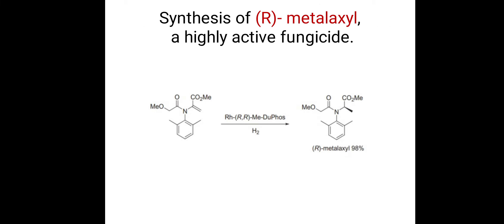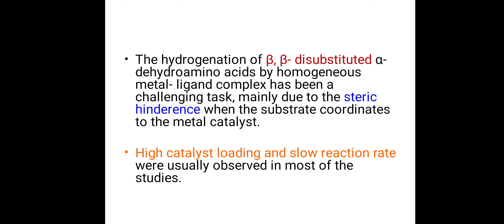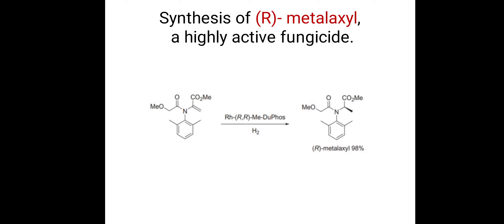The synthesis of R-metalaxyl, which is a highly active fungicide, involves hydrogenation of a carbon-carbon double bond in the presence of rhodium-RR-methyl-DUPHOS catalyst — rhodium is the transition metal and methyl DUPHOS is the chiral ligand, together making a chiral catalyst. Hydrogenation gives formation of a chiral center at the carbon attached to nitrogen, yielding R-metalaxyl in 98% enantiomeric excess. All these compounds are important products whose multi-step synthesis involves asymmetric hydrogenation as a key step.